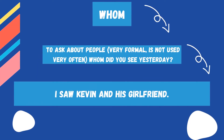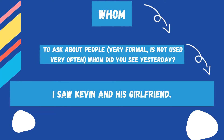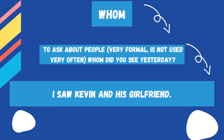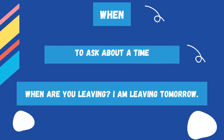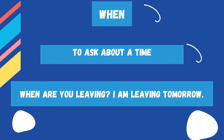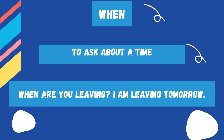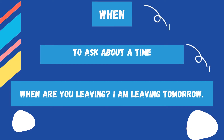Whom — to ask about people. This is a very formal way and it's not used very often. Example: 'Whom did you see yesterday?' — 'I saw Kevin and his girlfriend.' When — to ask about time. Example: 'When are you leaving?' — 'I am leaving tomorrow.'